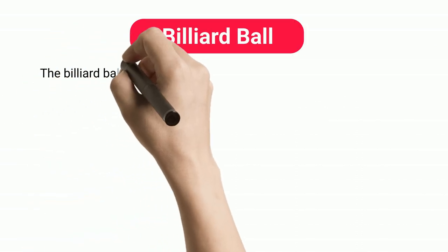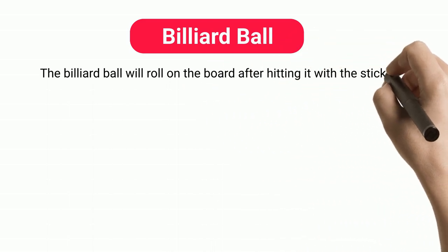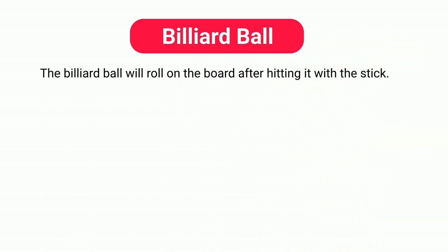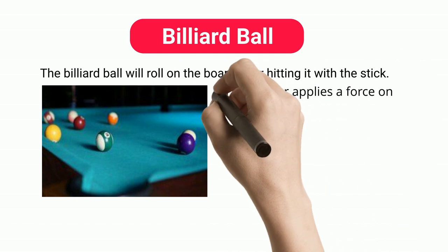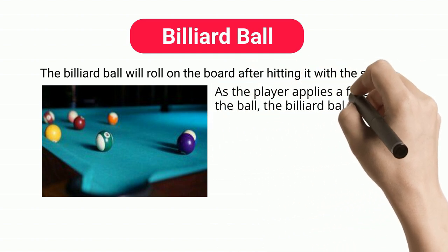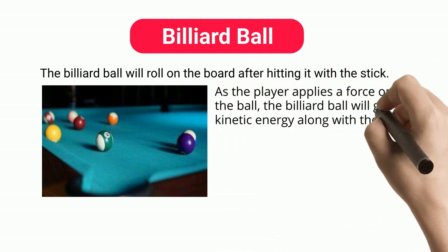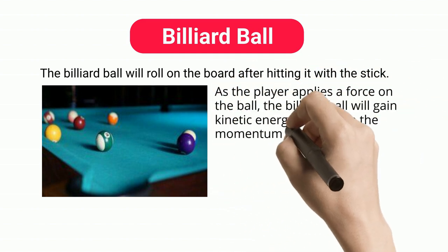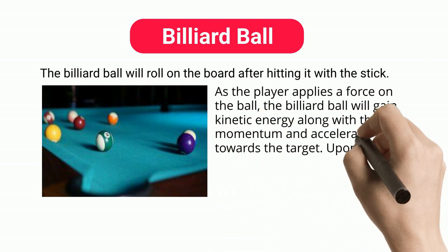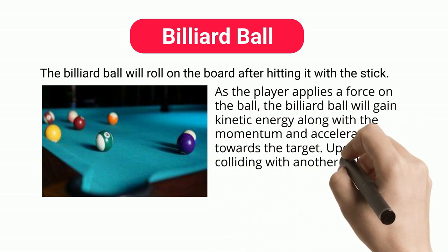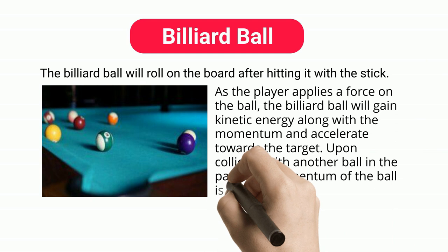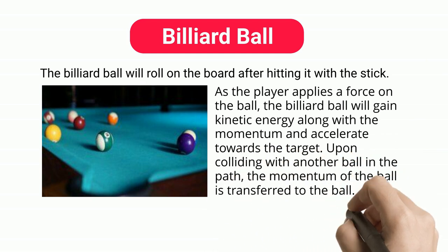Billiard ball. The billiard ball will roll on the board after hitting it with the stick. As the player applies a force on the ball, the billiard ball will gain kinetic energy along with momentum and accelerate towards the target. Upon colliding with another ball in the path, the momentum of the ball is transferred to that ball.